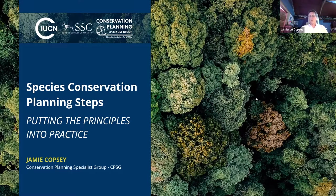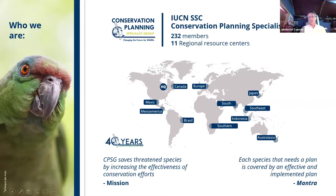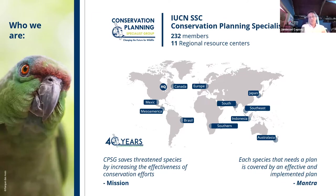A bit of background on us so everyone is clear: the Conservation Planning Specialist Group, like many specialist groups, has over 200 members. Importantly, we have a number of regional resource centers, illustrated on this slide, which involve organizations with staff able to give a proportion of their time to further the work of CPSG and help people in their region to plan for species they care about.